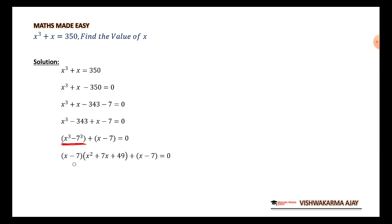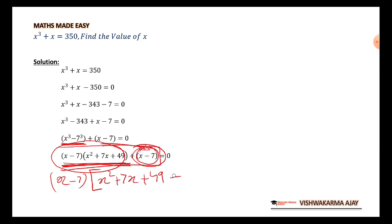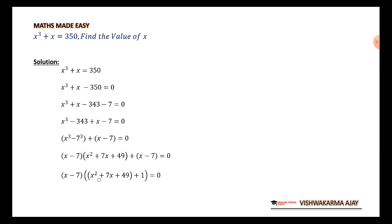So, x cube minus 7 cube is this part. x plus 7 is here directly. Now, if you will see this entire expression, this is one term and this is one term. I can take x minus 7 common from both the terms. So, I will be having x minus 7 out of my bracket. In the bracket x square plus 7x plus 49 and in place of x minus 1, now I have plus 1. 49 plus 1 will become 50.